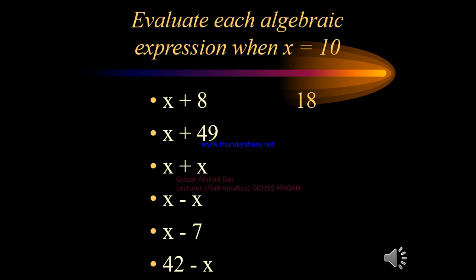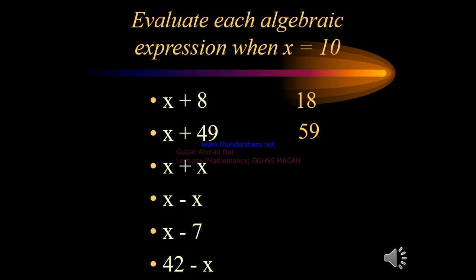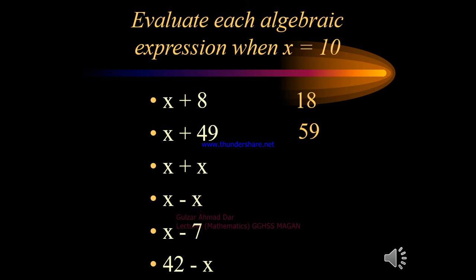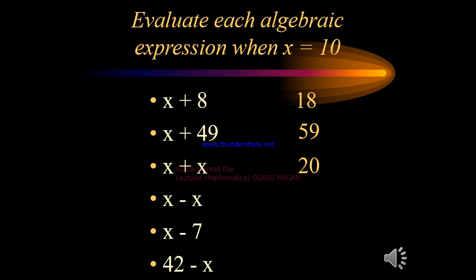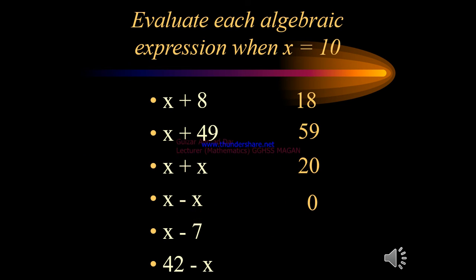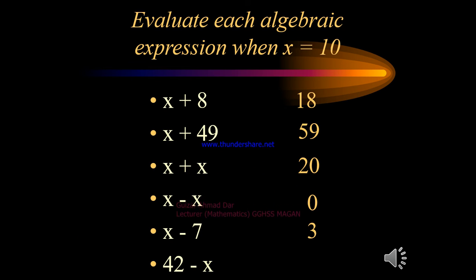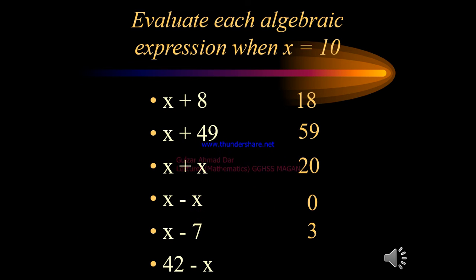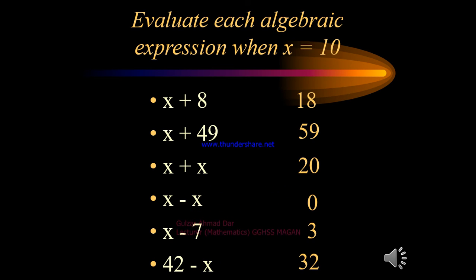Continuing with x equals 10: x plus x becomes 10 plus 10, which equals 20. 10 minus 10 equals 0. 10 minus 7 equals 3. And 42 minus 10 equals 32.